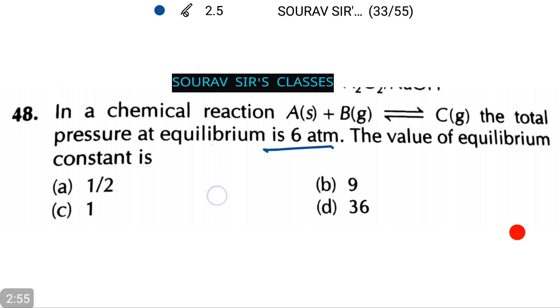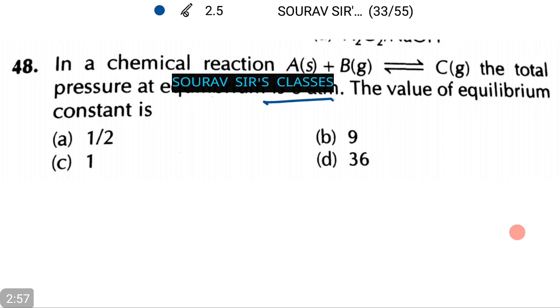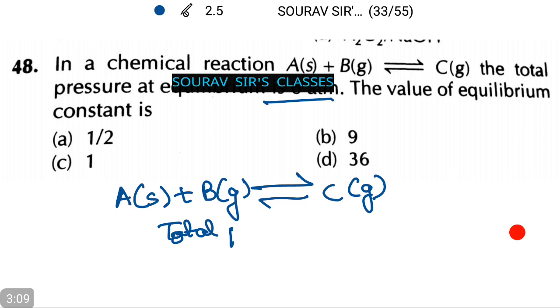Let's write down the given equation: A(s) + B(g) ⇌ C(g). Total pressure equals 6 atmospheres.